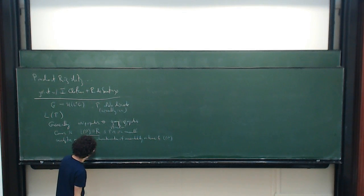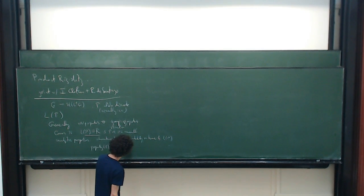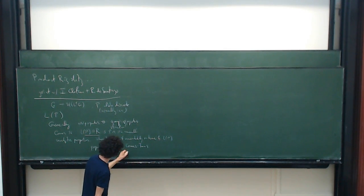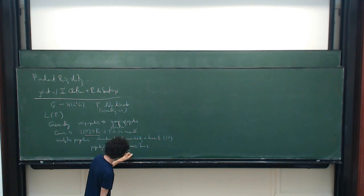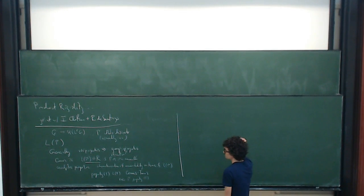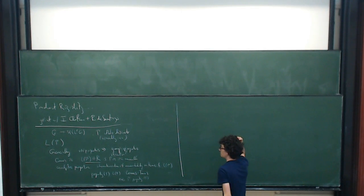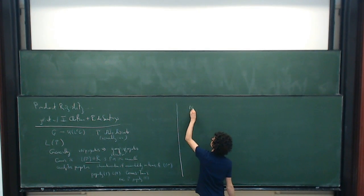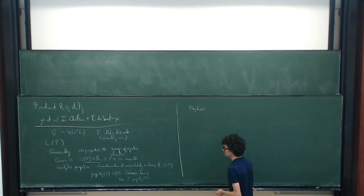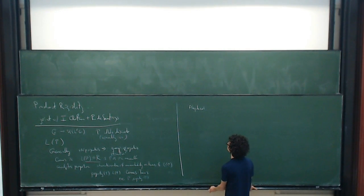Another example: there is a notion of property T for the group von Neumann algebra due to Connes and Jones, which corresponds to property T for the group in the usual sense. What I really want to talk about today, though, are questions that are not about analytic properties of the group, but rather how properties of the group von Neumann algebra can be shown to transfer — I want some sort of algebraic rigidity-type phenomena.